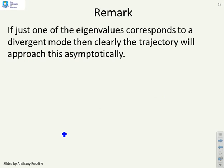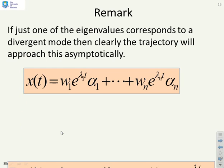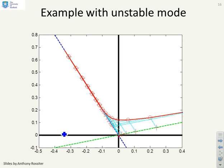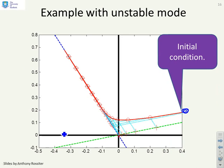If one eigenvalue corresponds to a divergent mode — its real part is greater than zero — then the trajectory approaches that eigenvector direction asymptotically, because e^(λt) grows to infinity. In the example shown, the component along w1 converges to zero, while the component along w2 grows without bound. Therefore the state eventually approaches infinity along the second eigenvector direction.